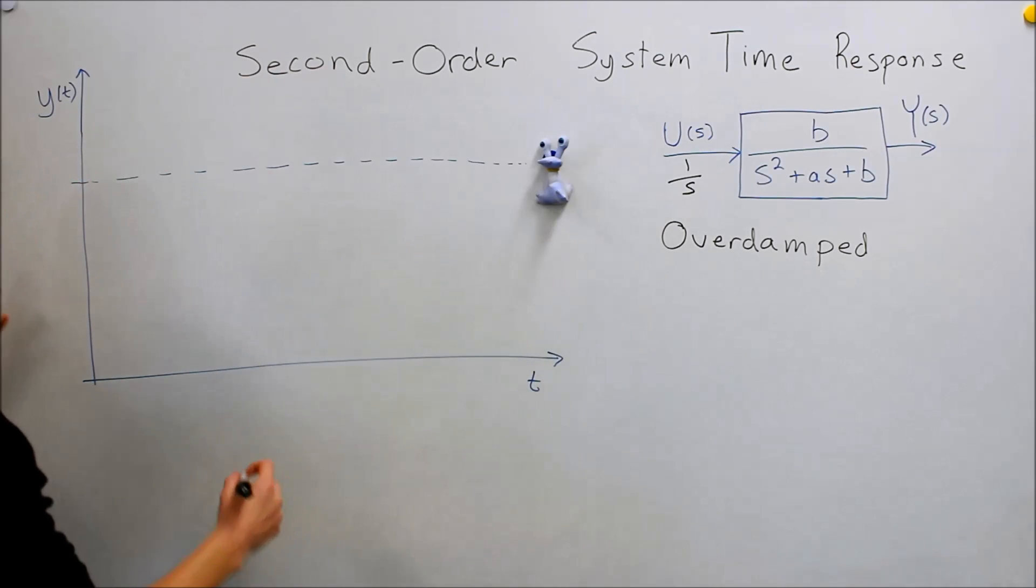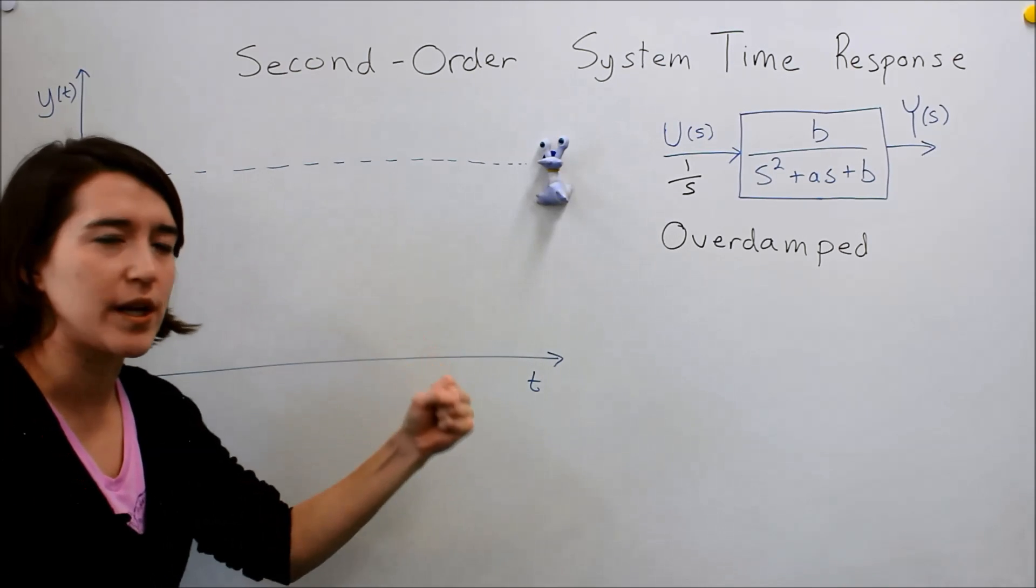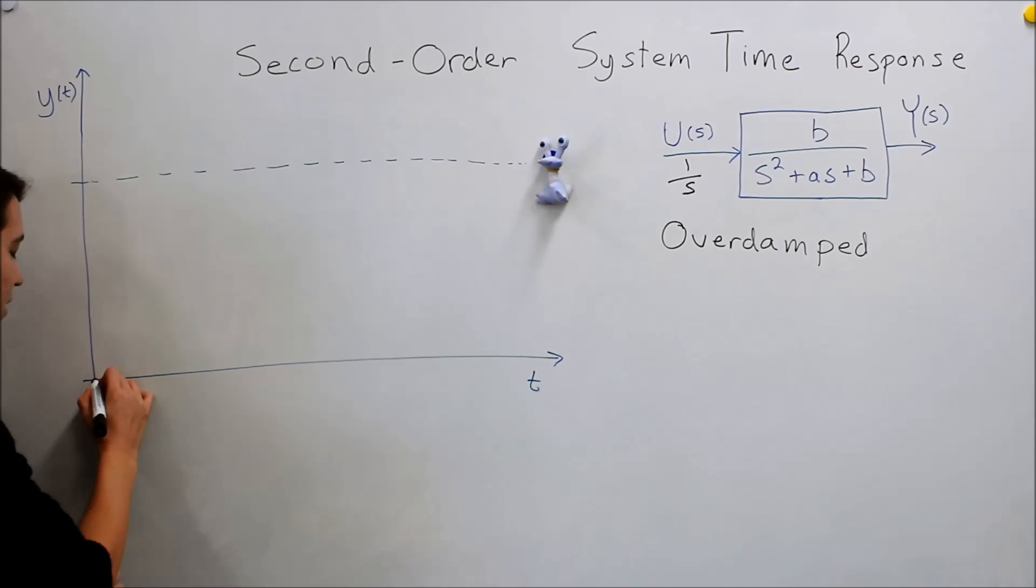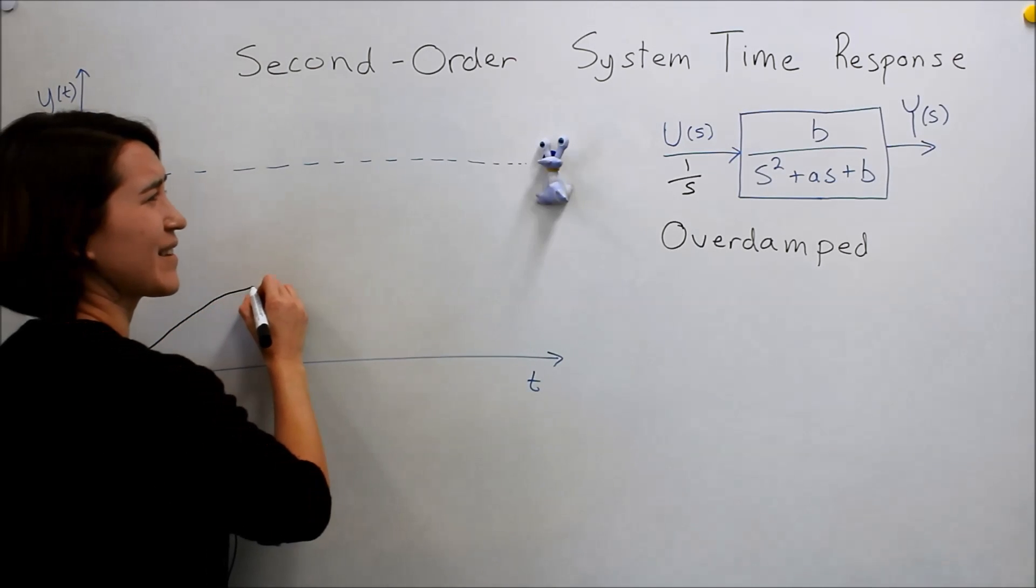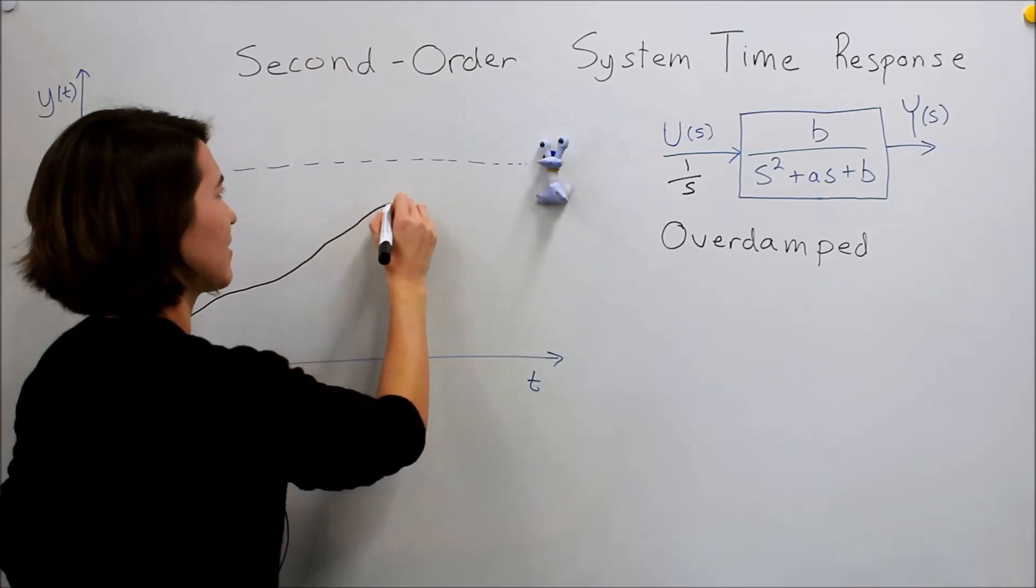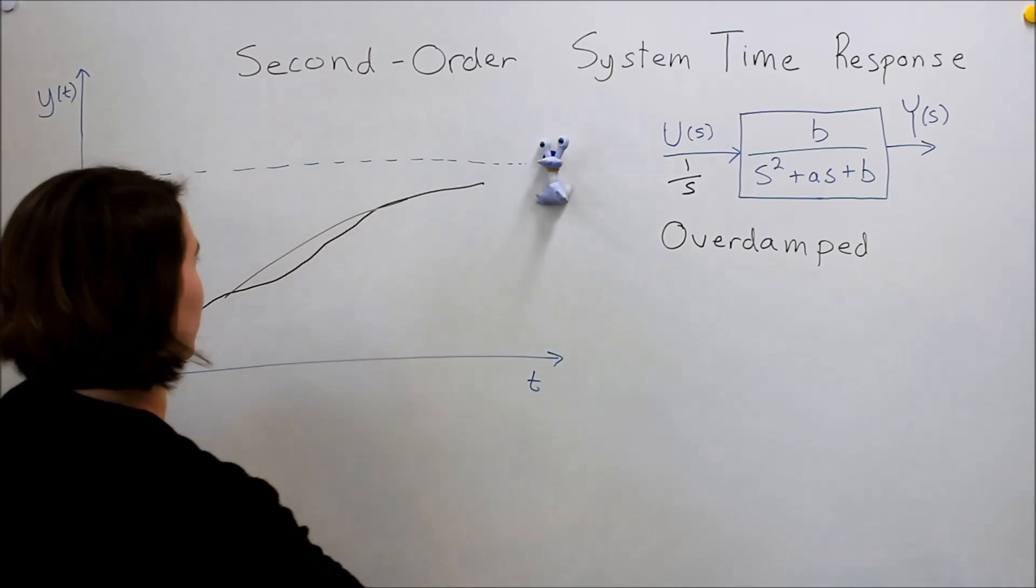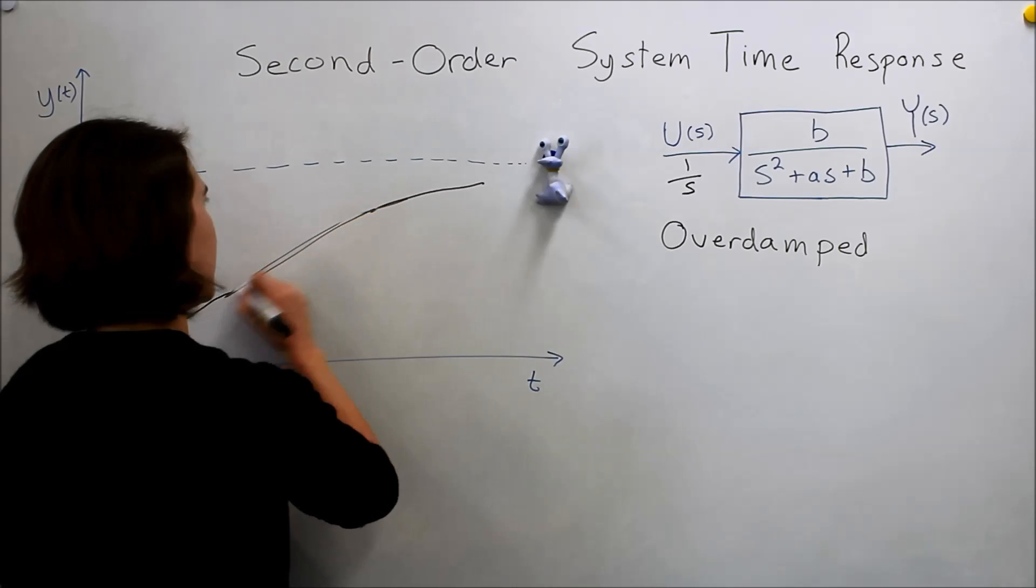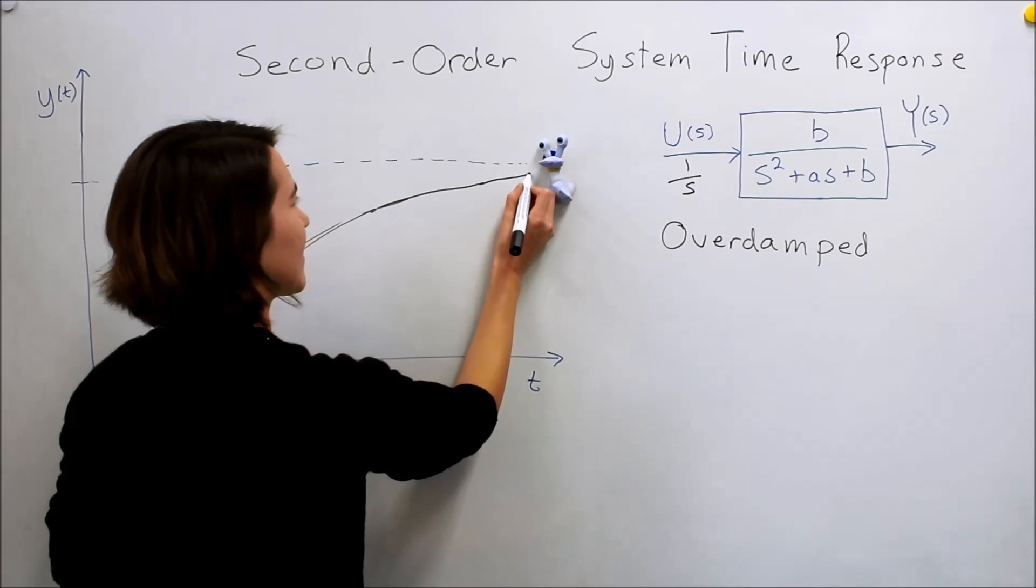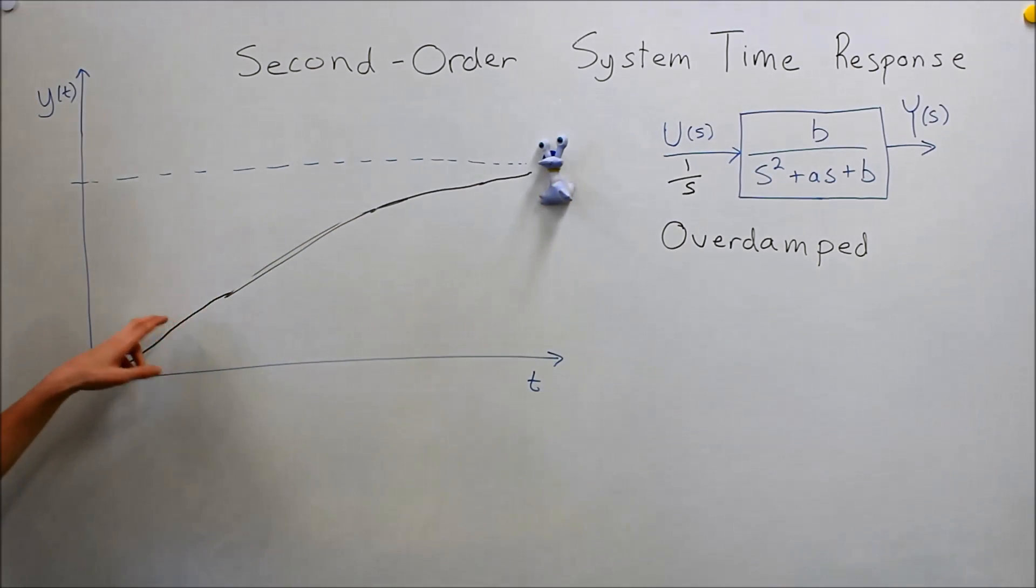An over-damped system, it's a stable system so it will go there, it just is really slow to get there. So you press, you say go, and it tries really hard, but it's just really slow to get there. This is like something that has a lot of mass, it's really hard to get there. It just takes a really long time to get going, and eventually it gets there. This is what we would call over-damped.